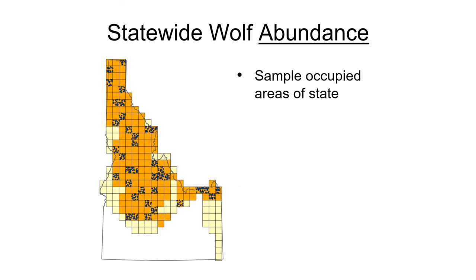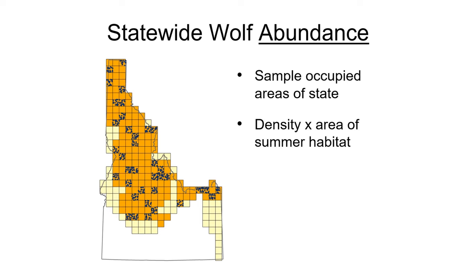This occupancy modeling also allows us to focus our abundance monitoring in the primary areas occupied by wolves. We need a higher number of wolf detections to estimate abundance, therefore we put clusters of abundance cameras in randomly selected cells within the occupied portion of the state. These abundance cameras are deployed at random locations within summer wolf habitat and are aimed at a potential wolf travel corridor at that location, like a trail or lightly used road. We use the resulting average wolf density from the space-to-event model and the acreage of predicted summer wolf habitat within the occupied portion of the state to produce the statewide abundance estimate.